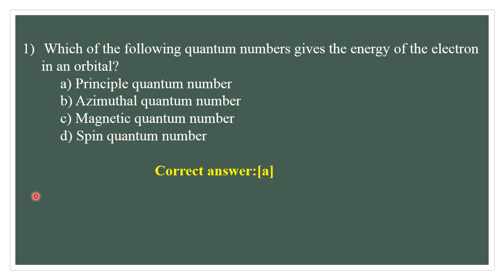Question number 1. Which of the following quantum numbers gives the energy of the electron in an orbital? Options: A) Principal quantum number, B) Azimuthal quantum number, C) Magnetic quantum number, D) Spin quantum number. The correct answer is A — the Principal quantum number (N) gives the energy of the electron in the orbital.